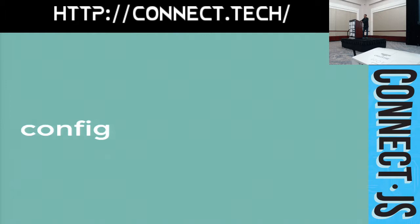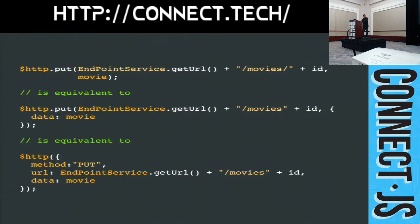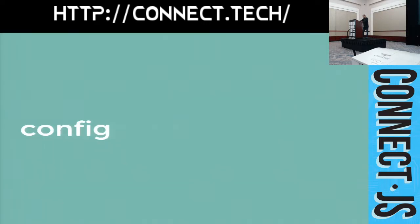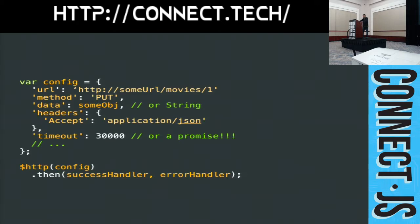That object is called the config object, and the config object is where the power is in $http calls. It lets you tweak every single request on a per-request basis. Start to love and learn the config object. It is the guy who does all the heavy lifting and will let you tailor your HTTP requests.